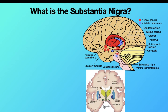The substantia nigra is part of what we call the basal ganglia, and the basal ganglia is a bunch of structures located in the brain. They are the caudate nucleus, the globus pallidus, which is behind the putamen, the subthalamic nucleus, the substantia nigra, the olfactory tubercle, the ventral pallidum, and the nucleus accumbens.